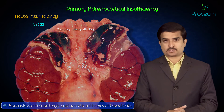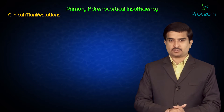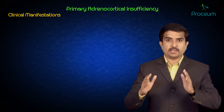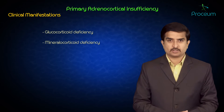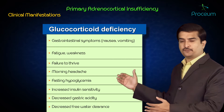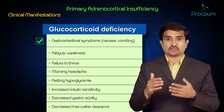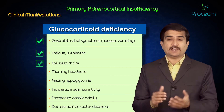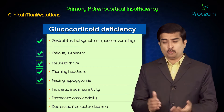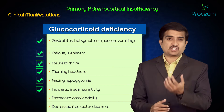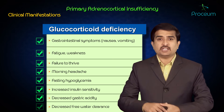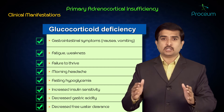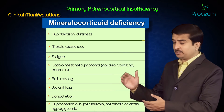Whatever the cause — acute or chronic — clinical manifestations are predominantly due to glucocorticoid and mineralocorticoid deficiency. Symptoms of glucocorticoid deficiency include gastrointestinal symptoms like nausea and vomiting, seen in approximately 100% of cases, along with fatigue, weakness, failure to thrive, morning headache, fasting hypoglycemia, increased insulin sensitivity, decreased gastric acidity, and decreased free water clearance.